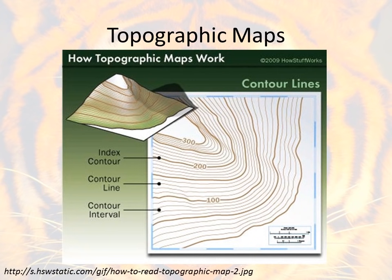When thinking about topographic maps, you don't need to know how to make one — you just need to know how to read and interpret it. Starting with some terminology: we've got the index contour. These are the darker contour lines, and that's usually every fifth line on a topographic map.